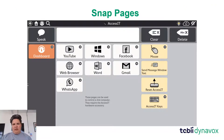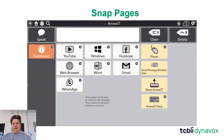So how do we use it? Within Snap Core First, if we go into the dashboard on our toolbar, you will see a button for Access IT. Within there we've got some ready-made page sets for popular applications — things like YouTube, Facebook, WhatsApp, and Windows applications. Of course we can also use the mouse page set, which lets us control the mouse and do anything on that computer that we could do with a normal mouse.